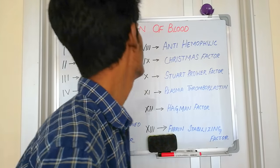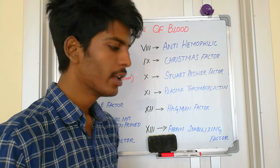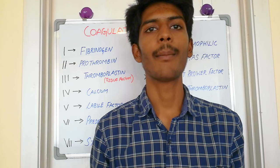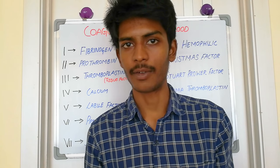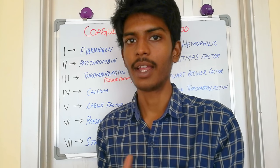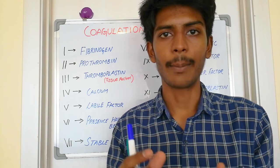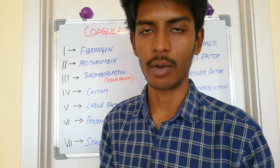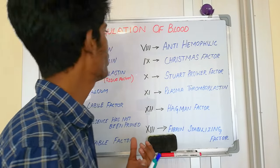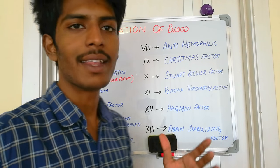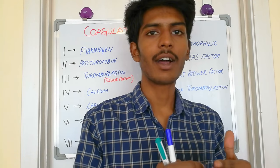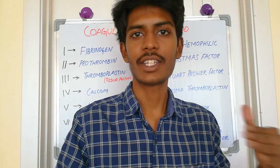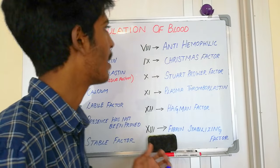In this video we'll discuss coagulation of blood. Coagulation means blood, which flows in a liquid state in the blood vessel, is converting into a solid, jelly-like mass called a clot. This coagulation is mediated by many enzymes, which is why we call it a cascade of coagulation reactions — a chain of reactions happening during blood coagulation.